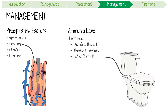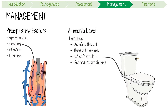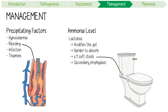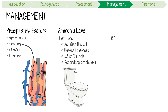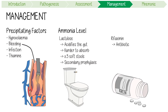After the first episode of HE, lactulose is usually continued as secondary prophylaxis. In the acute setting, you can also add rifaximin, which is an antibiotic, if symptoms are persistent. In theory, this kills off the bacteria producing ammonia.